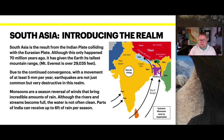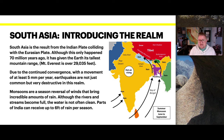Looking at this diagram on the right-hand side, we can see the monsoonal seasons between June and September. We also see that it's a reversal of winds, hot air rising, causing this great amount of precipitation.